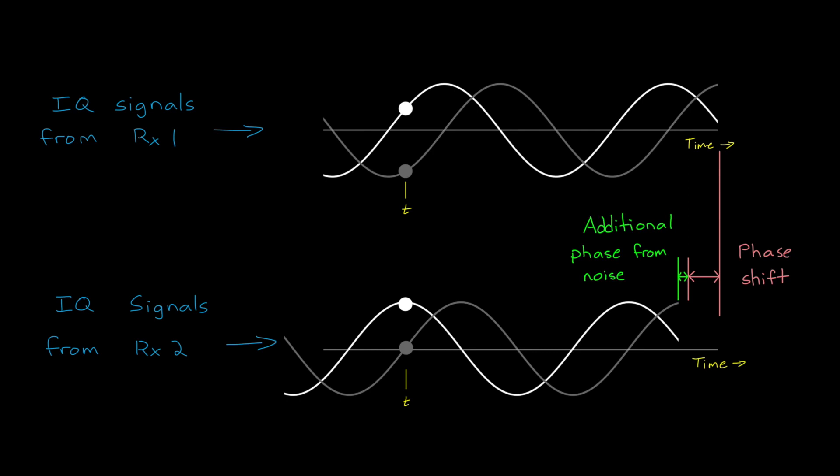Of course, we don't actually find the phase shift by manually shifting signals around like this. This is just a way to visualize how it's possible to calculate angles from two separate antennas. Instead of this, we use a Fourier transform to calculate the angles. And we're going to come back to that in just a bit, so hold that thought. Because before we move on, I want to talk a little bit about angular resolution.